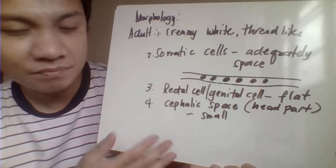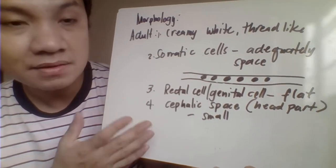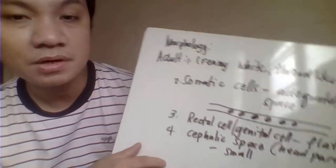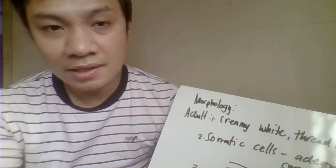This is important because it differentiates Wuchereria bancrofti from Brugia malayi — Brugia malayi has a cephalic space much bigger compared to Wuchereria bancrofti. For adult male worms, they measure 2 to 4 cm, with a curved posterior tail and presence of unequal spicules. The female measures 8 to 10 cm with paired genitalia.